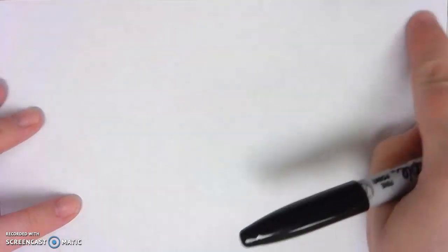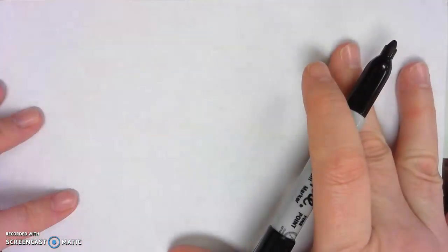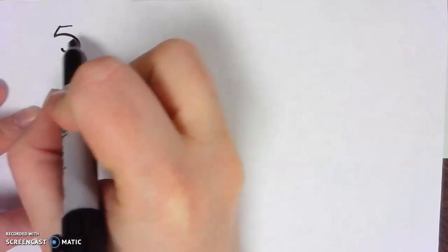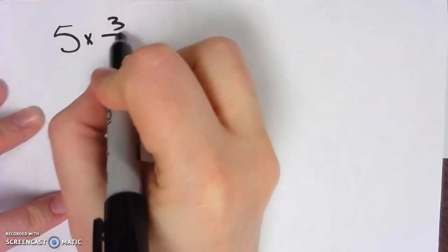Hi fourth grade mathematicians. I'm at the point in my Zearn lesson where I'm told to go get my student notes and I don't have any, so I'm just gonna use a blank piece of paper today and I'm gonna write down the same problem that they have on their screen, which is 5 times 3/4.